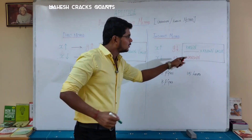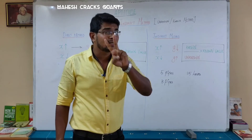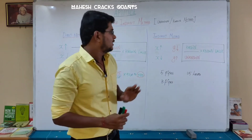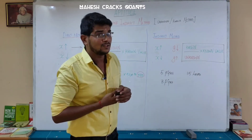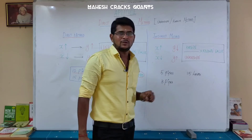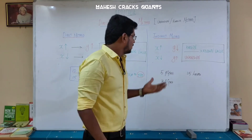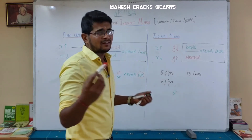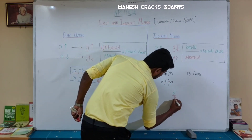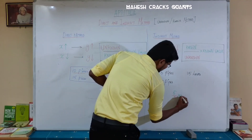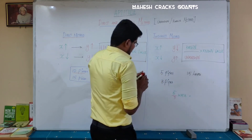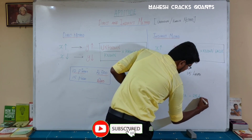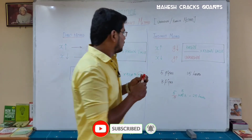For indirect, the formula is: known divided by unknown, multiplied by the known value. Three values are given — 5 pipes, 3 pipes, and 15 hours. Five and three are the same type (pipes), and 15 hours is the different value. Known is 5 pipes, unknown is 3 pipes. So: 5 / 3 × 15 = 25 hours. It takes 25 hours to fill the tank with three pipes.